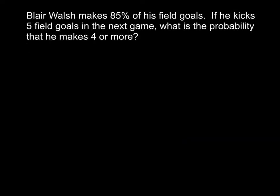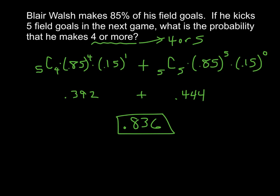This is our last example. Blair Walsh makes 85% of his field goals. If he kicks five field goals in the next game, what is the probability that he makes four or more? Why don't you go ahead and pause the video, try this one on your own, and then check back to see how you did. If we want to know the probability that he makes four or more, that means four or five out of the five. It's actually a very high percentage. He's 83.6% likely to make four or five of his field goals in the next game.